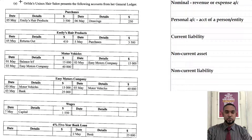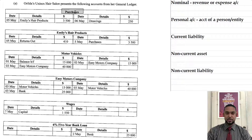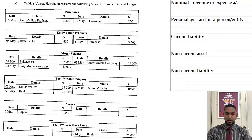So as per usual, the first thing we do is we take a read of the question. Orilda's unisex hair salon presents the following accounts from her general ledger. So what do we have? We have purchases, Emily's hair products, motor vehicles, Easy Motors Company, wages, and a 6% 5-year bank loan.